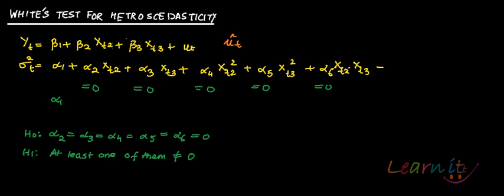And you will have to superimpose this U hat T squared instead of Sigma squared T, because Sigma squared T is not a known variable. The only thing which you can get is U hat T squared. So, you will be running a regression of U hat T squared against a constant, XT2, XT3, XT squared, XT3 squared, and X2, X3. And from that regression, you will be picking up R squared.